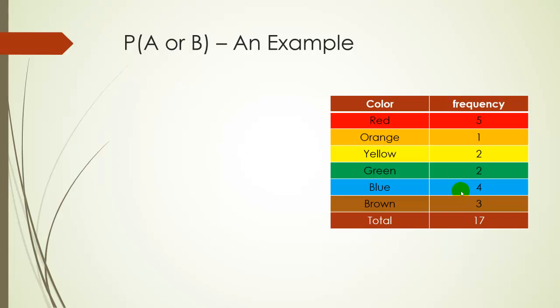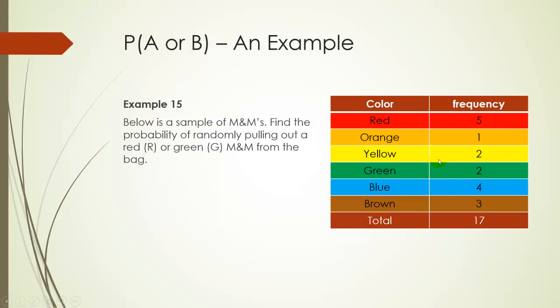Let's look at probability A or B, just an example. So let's go back to looking at our M&Ms. This is a slightly different bag than before. Here we have a sample of M&Ms. Let's try to find the probability of picking out a red or green M&M. We have 5 red M&Ms, 2 green M&Ms, so 7 out of 17 chance.